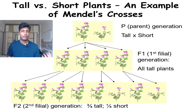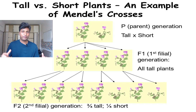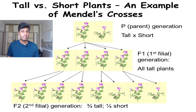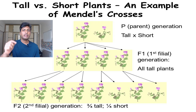When Mendel performed a cross between a tall and a dwarf garden pea plant, what did he get in the F1 generation? The F1 generation is the first generation formed after the cross between the parents. He was surprised to see that all the F1 generation plants were tall. He then wanted to know what would happen if he crossed the F1 plants with each other.